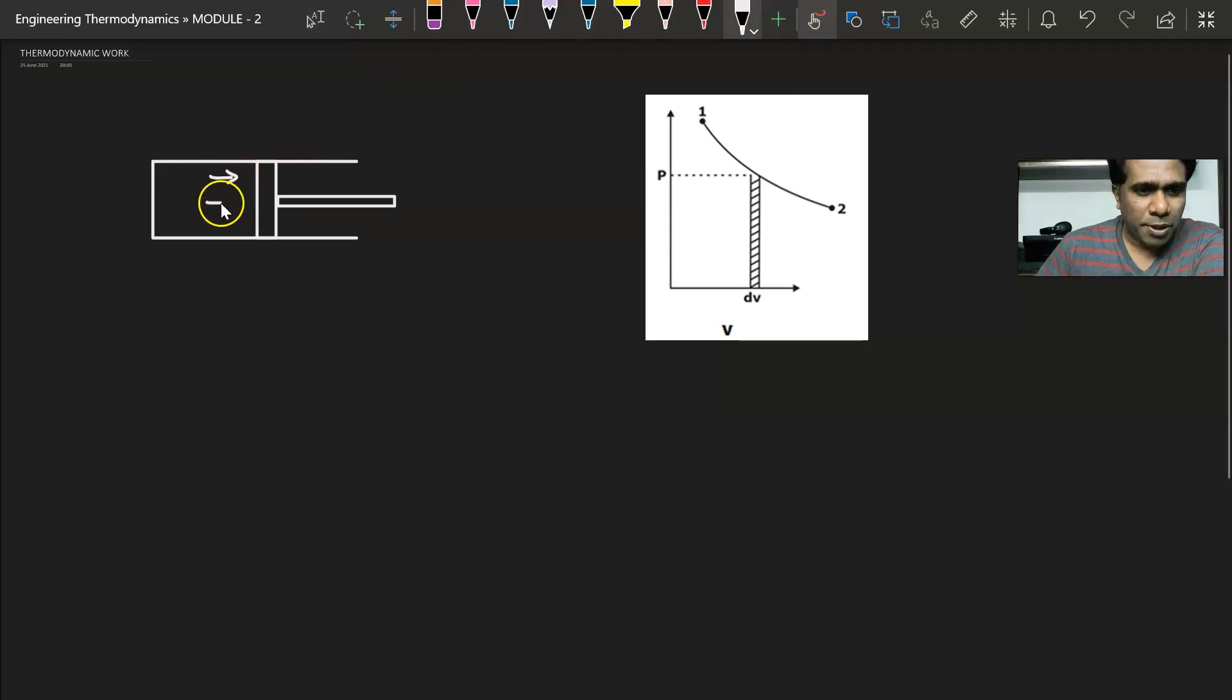A pressure P is acting on one end of the piston, therefore there will be a displacement that is happening. Say from the initial position 1, the piston displaces to a final position 2, and let this distance be marked as dx.